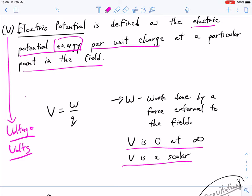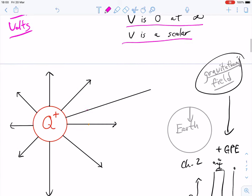V is considered to be zero at infinity. So as you get further and further out, the voltage will drop and at infinity, it will be zero. This next part is very important because the work done has to be done by an external force to the field.